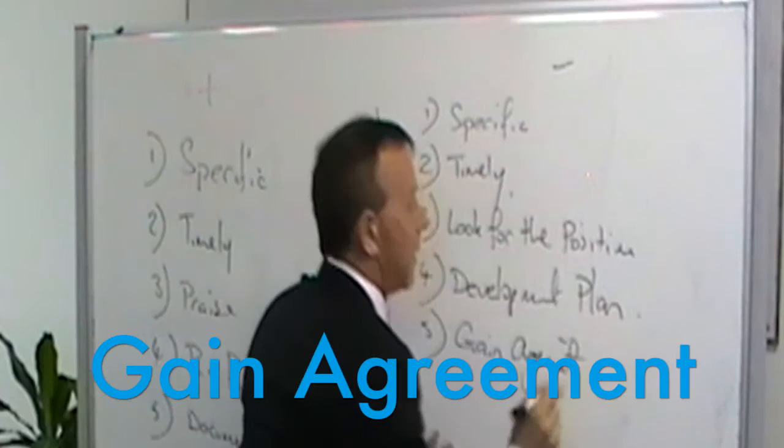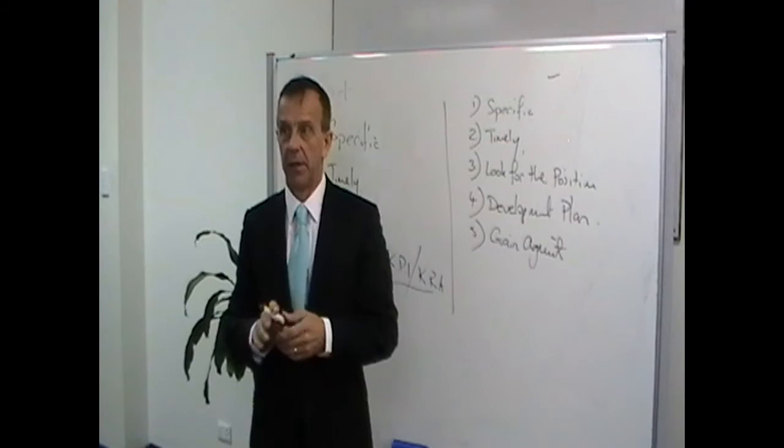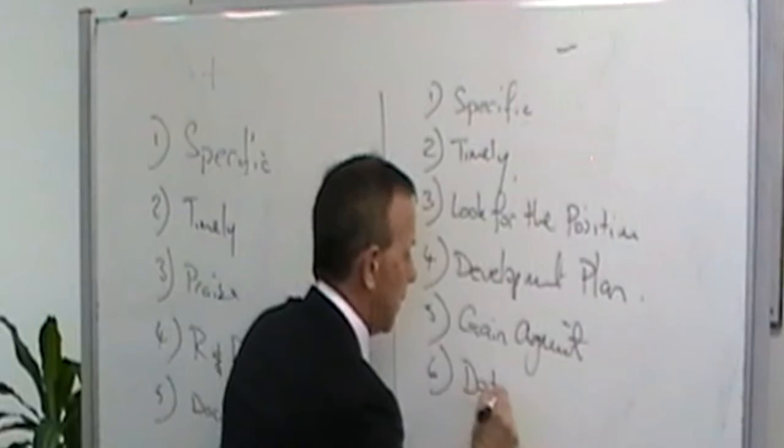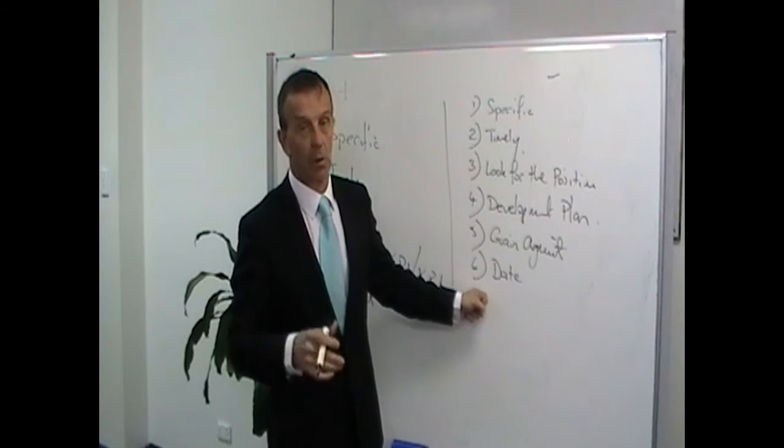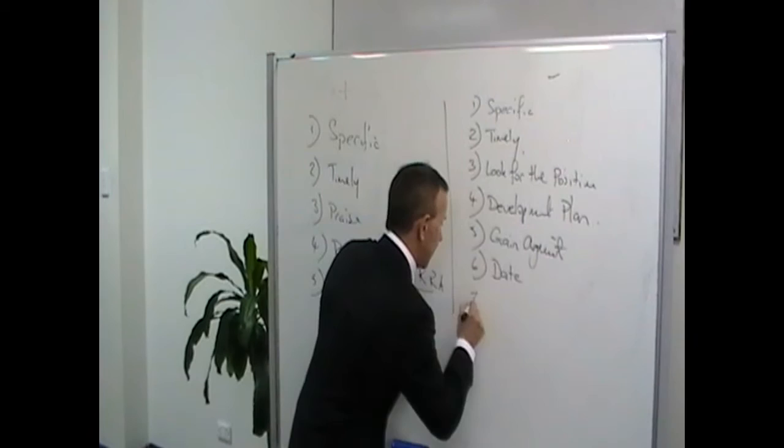You would number five: gain agreement on the content of the plan, get some buy-in from the individual. Also with the development plan would be tied into a review date where you would agree with the individual we'll catch up next week to see how you're tracking with arriving to work in a timely manner, or if it's a week or two weeks or a day, whatever it be. Number seven is like the positive: document.